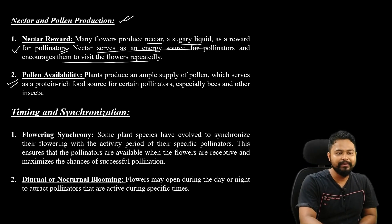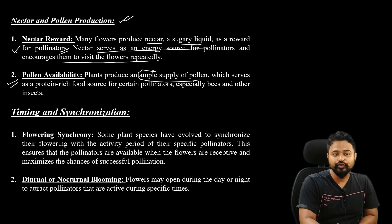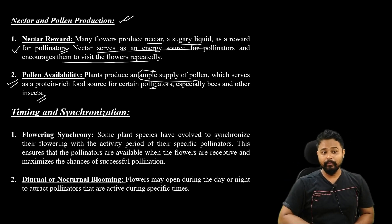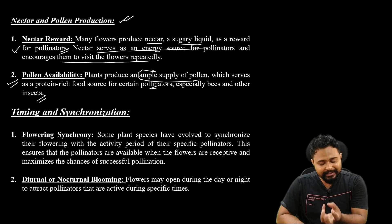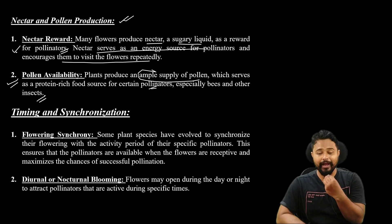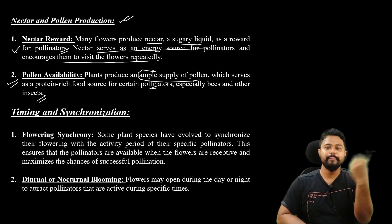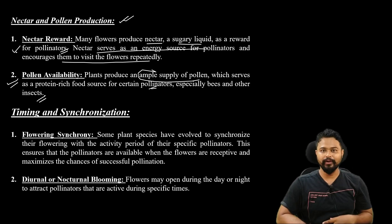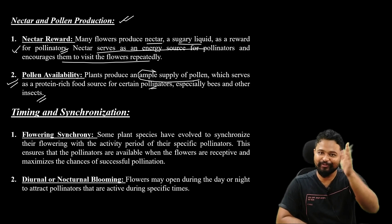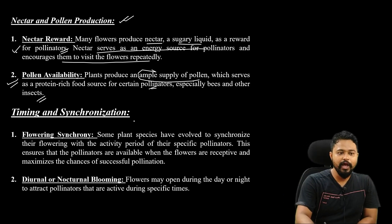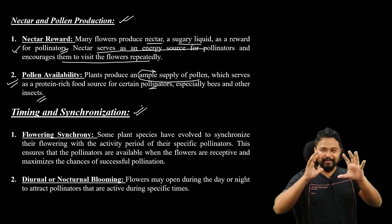Pollen availability: plants produce an ample supply of pollen which serves as a protein food source for certain pollinators, especially bees and other insects. These pollinators carry pollen between flowers, enabling seed production.